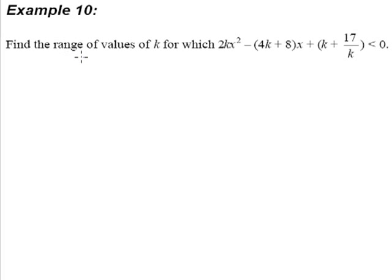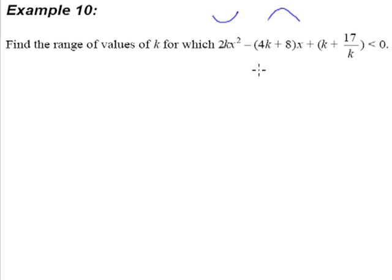For example 10, find the range of values of k for which this quadratic expression is less than zero. Now this is where you have to fully understand what we have just talked about in quadratic inequality. First of all, what must come across your mind is that this is a quadratic expression — it's either a happy face curve or a frowny face curve. In order for a quadratic expression to be always less than zero, your quadratic equation has to always be beneath the x-axis.